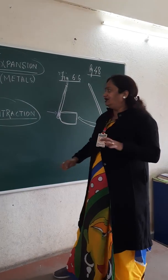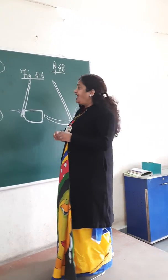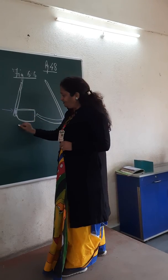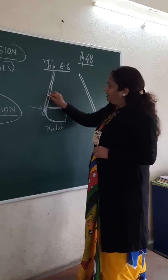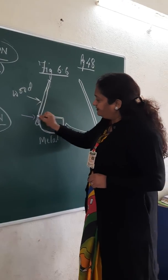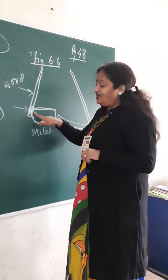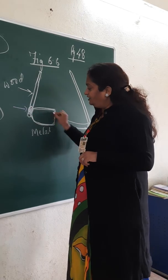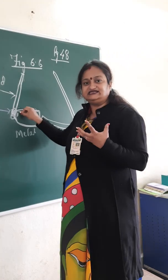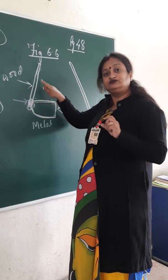So, children, here what happens — the base is made up of iron, which is a metal, and the outer part is made up of wood. Here it is a ring; this ring is made of iron. So what we have to do — this particular base, which is the ring — we will heat it, because its size is small and it will not fit the wood.